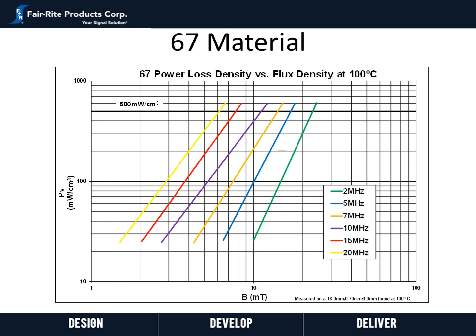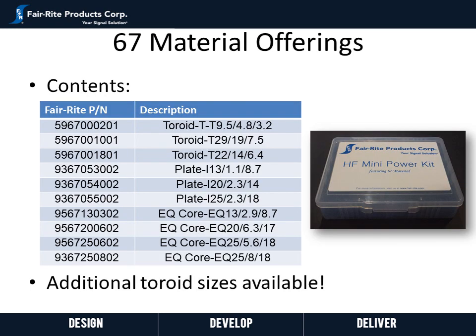For 67 material, we are plotting power loss density versus flux density at 100 degrees C at frequencies ranging from 2 megahertz to 20 megahertz. We have also bolded the power loss density at 500 milliwatt per CC for reference, as we did on the other materials. At 10 megahertz, for example, you don't hit 500 milliwatt per CC until well over 10 milli Tesla. We currently offer engineers our 67 material high-frequency mini power kit containing a number of toroids as well as EQ and I cores for evaluation, in addition to a number of other cores available.